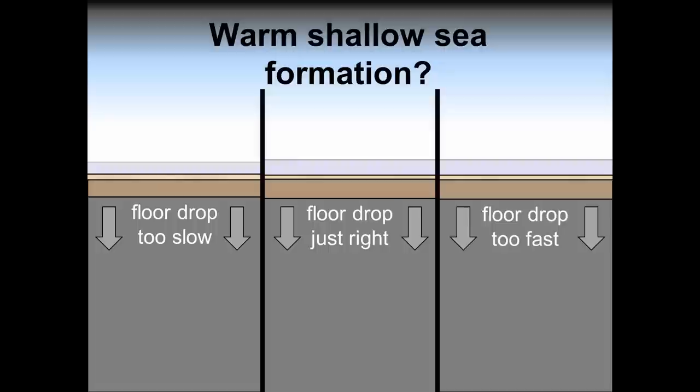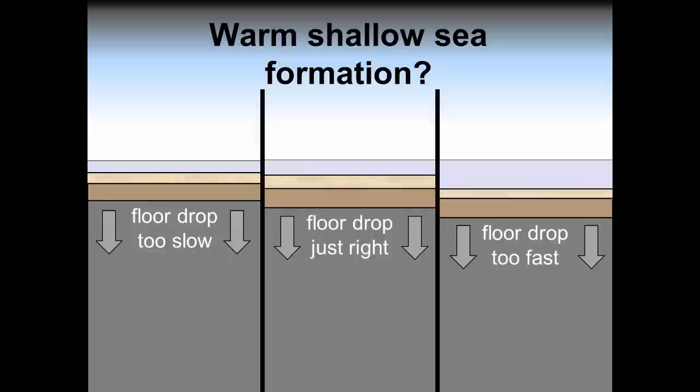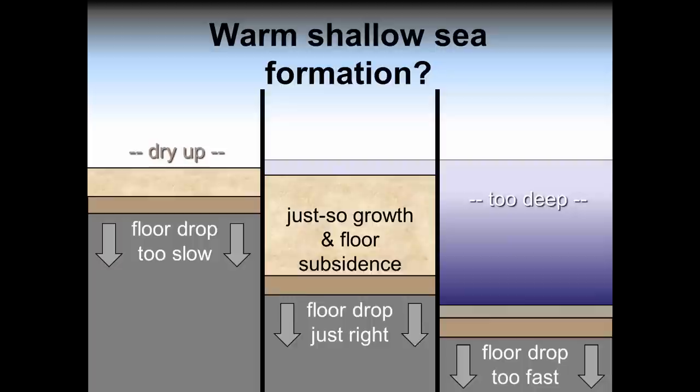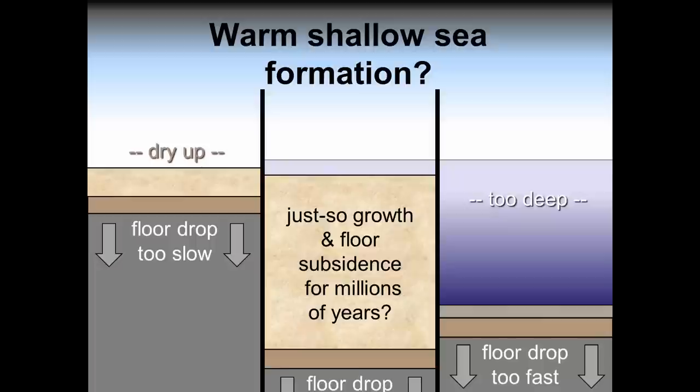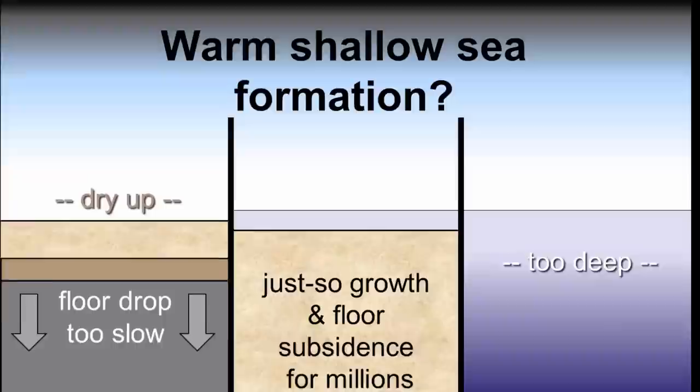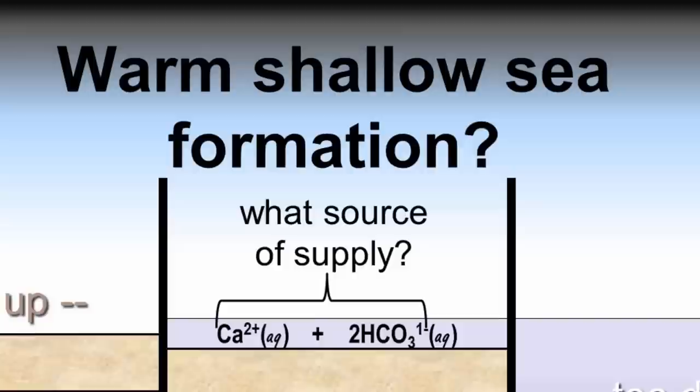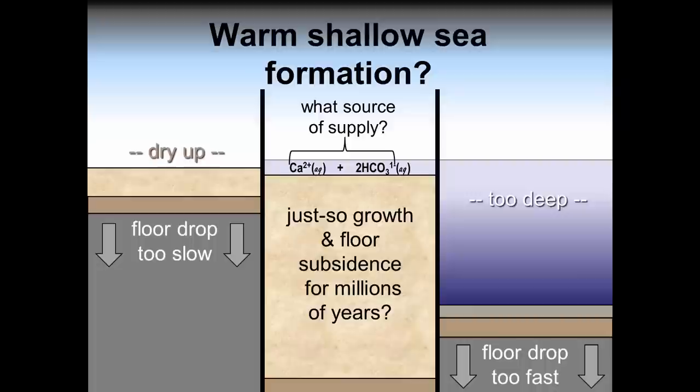For a thick layer to form, the seafloor must drop away by some undefined yet fine-tuned mechanism. This undefined dropping of the seafloor must occur at a precise and even rate over millions of years. If it drops too slowly during that time, then the limestone will build up too fast and the sea will dry out before the thick layer can develop. If the floor drops too quickly, the organisms producing the limestone will die. Remember, too, that the organisms can't just make their shells and structures out of nothing. They require source materials in solution with the seawater. Where did that come from? In all cases, a viable source of the required building blocks of aqueous calcium and bicarbonate ions dissolved in the sea's water must also be identified in sufficient amount to explain the enormous mass of limestone that has been produced.